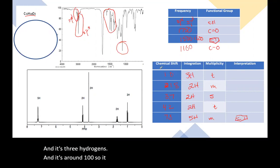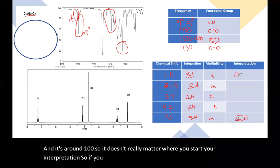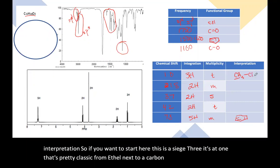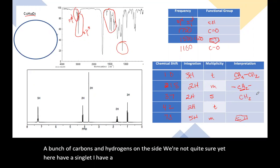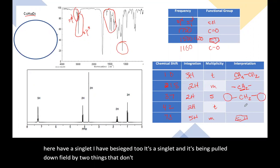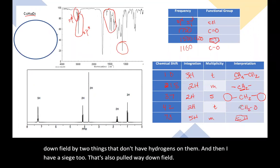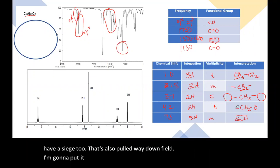So it doesn't really matter where you start your interpretation. So if you want to start here, this is a CH3. It's at 1. That's pretty classic for a methyl next to a carbon. It's a triplet. So it's next to a CH2. This is a CH2. It's a multiplet. We've got a bunch of carbons and hydrogens on the side. We're not quite sure yet. Here I have a singlet. I have a CH2. It's a singlet and it's being pulled down field by two things that don't have hydrogens on them. Then I have a CH2 that's also pulled way down field. I'm going to put it next to an oxygen because we know we have oxygens and it's a triplet. So it's next to a CH2.